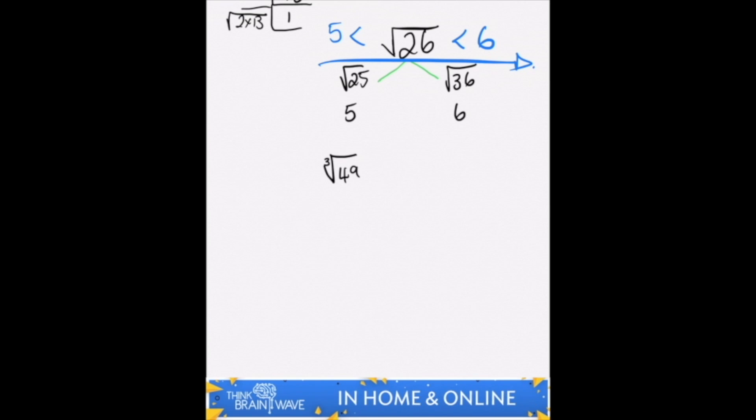So once again let's try something like 3 cubed. Now 3 cubed is 3 times 3 times 3. So 3 times 3 is 9 times 3 is 27. So we can agree that that's less than 49.